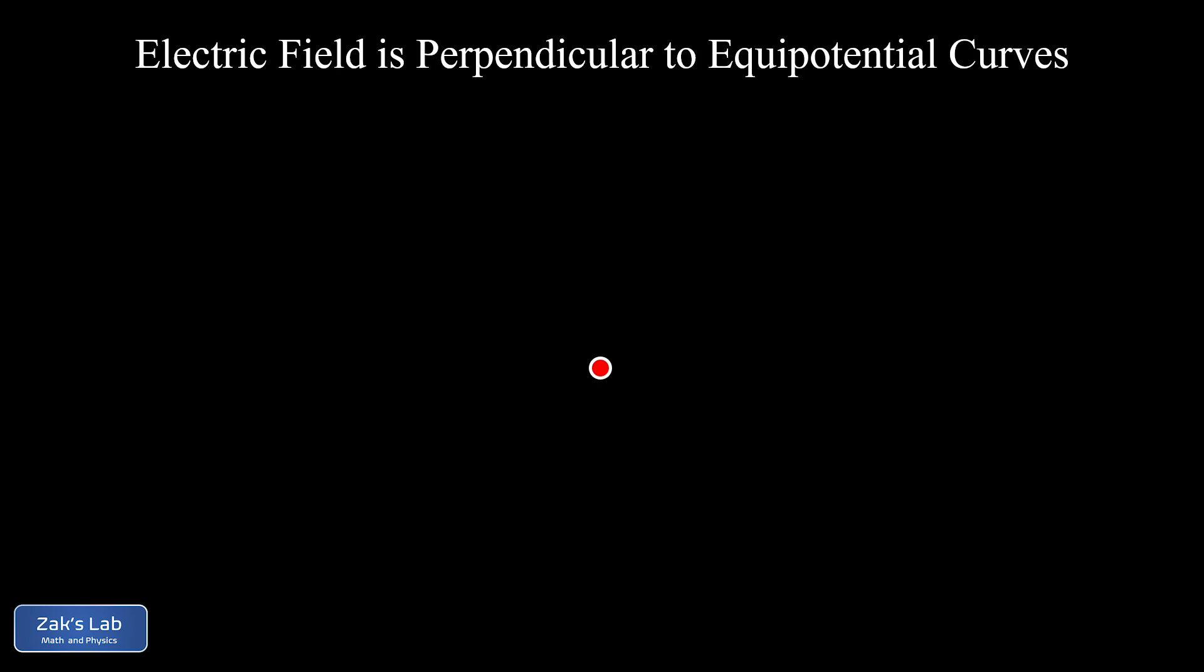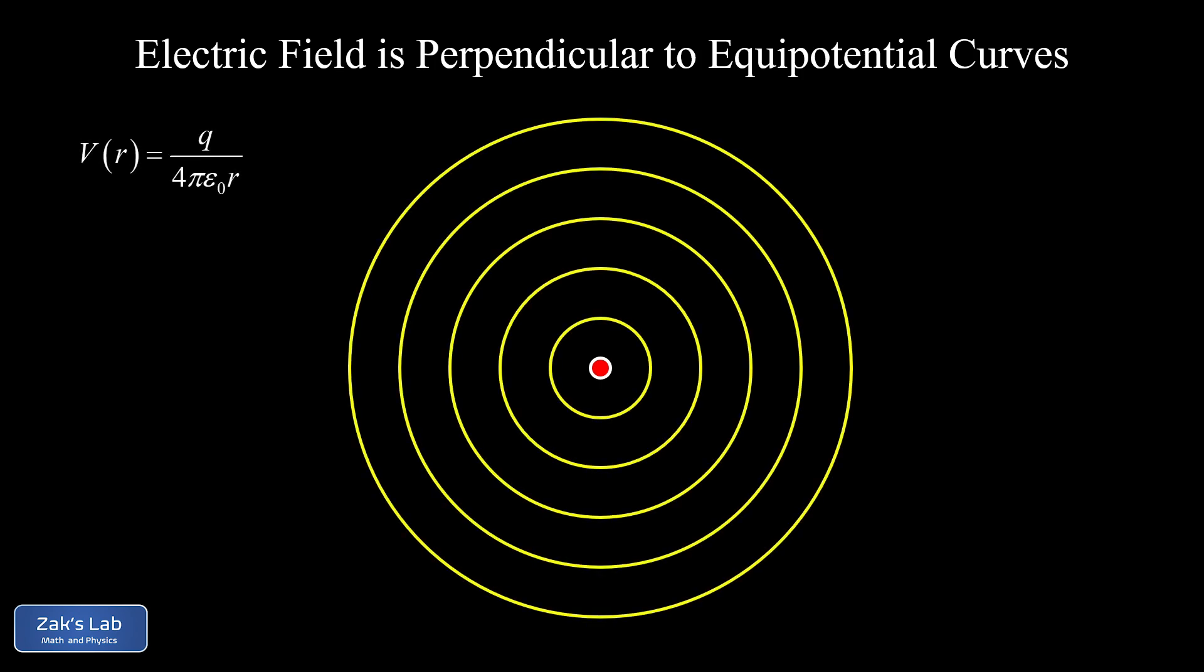And we've already seen an example of this perpendicular relationship between electric field lines and equipotential curves. And that example is the simple positive point charge at the center of your screen. So recall that the electric potential for a point charge is given by Q over 4 pi epsilon 0 R. And if we choose a particular value of R for that, the potential is going to be constant.